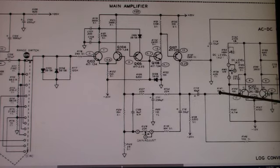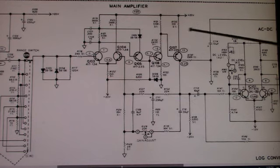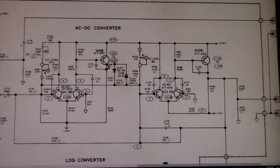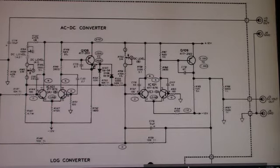The output at the collector Q107 connects through capacitor C113 to the AC to DC converter. It's also connected through this voltage divider through C114 to an AC out jack on the output.